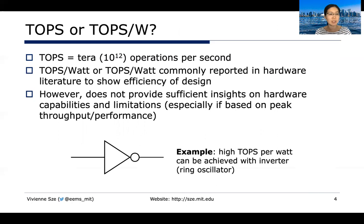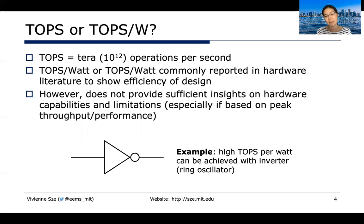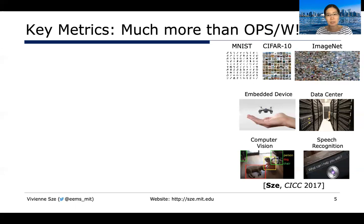A common metric reported for computation is TOPS, or TOPS per watt — the number of tera operations per second and how many operations per second you can achieve under a certain power consumption. However, this doesn't provide sufficient insight on hardware capabilities and limitations, especially when reported based on peak throughput. One easy way to get very high TOPS per watt is just to use a ring oscillator — basically an inverter that flips up and down — but whether it does anything meaningful is something else. So it's important to consider more metrics than that.